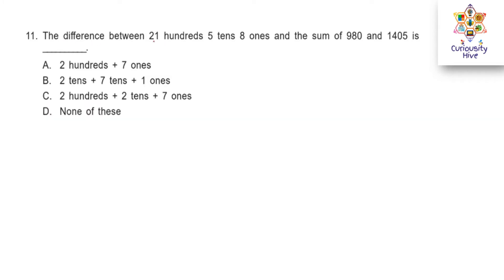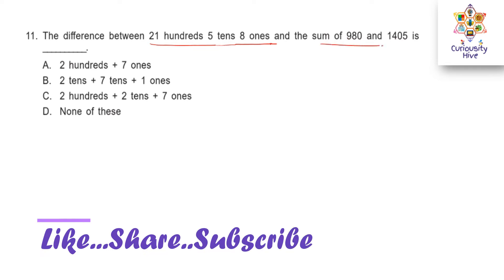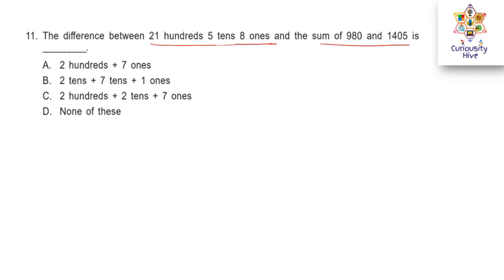The difference between 2 hundreds, 5 tens, 8 ones and the sum of 980 and 1405 is dash. Try to solve and choose the right answer.